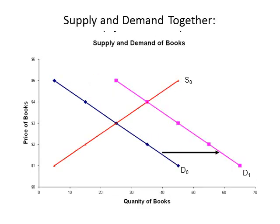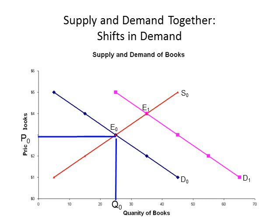Now let's include a supply curve with our diagram along with the shift in demand. The supply curve is given a name using S and a number; the smaller the number, the older the supply curve. The first supply curve is given the name S0. Once the shift has taken place, there are three things of interest: what happens to the equilibrium point, what happens to the equilibrium price, and what happens to the equilibrium quantity.